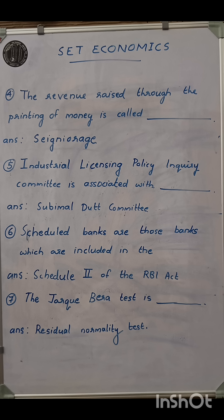Sixth question: scheduled banks are those banks which are included in the second schedule of the RBI Act. The Jarque-Bera test is used for the residual normality test.